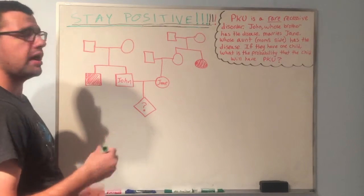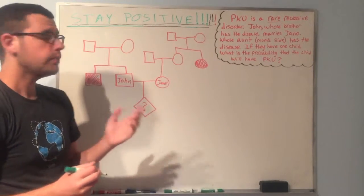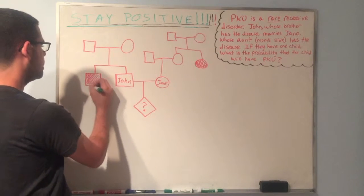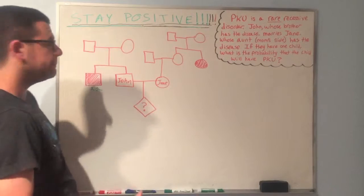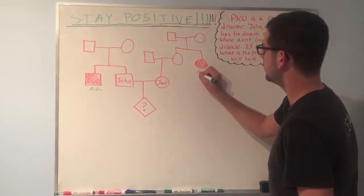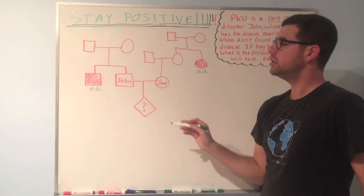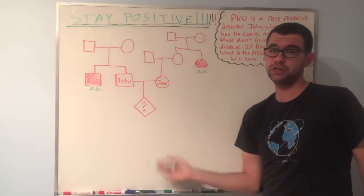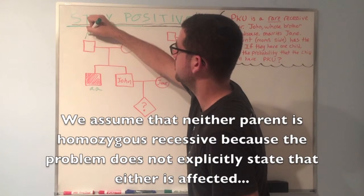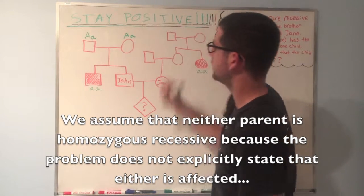Now the way I like to start these is by drawing out which genotypes we know for sure. Since it's a recessive disorder, we know that the people who are filled in must be homozygous recessive. So we know that John's brother will be little a little a. And we know similarly that Jane's aunt will be little a little a. So far so good.